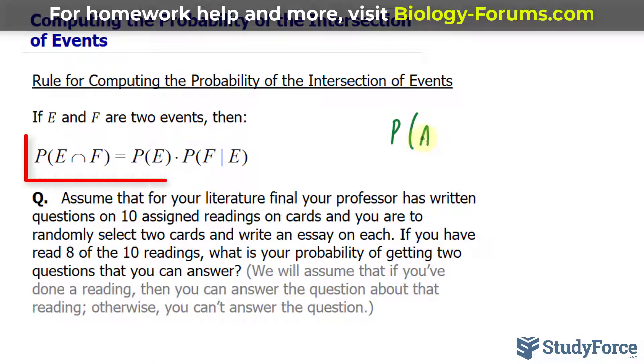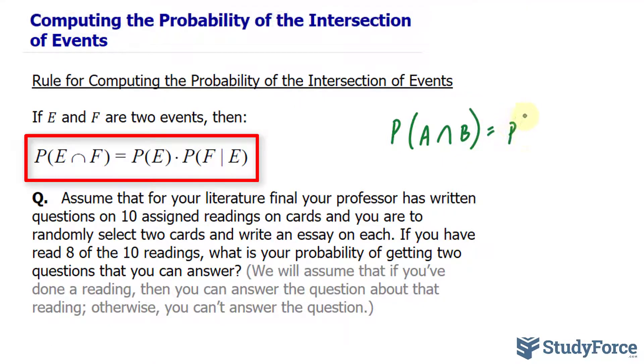By the rules shown up here, all we have to do is find the probability of A and multiply it to the conditional probability of B given A. Let me write that down for you. The probability of A, which is you knowing how to answer the first question, is a probability of 8 out of 10.